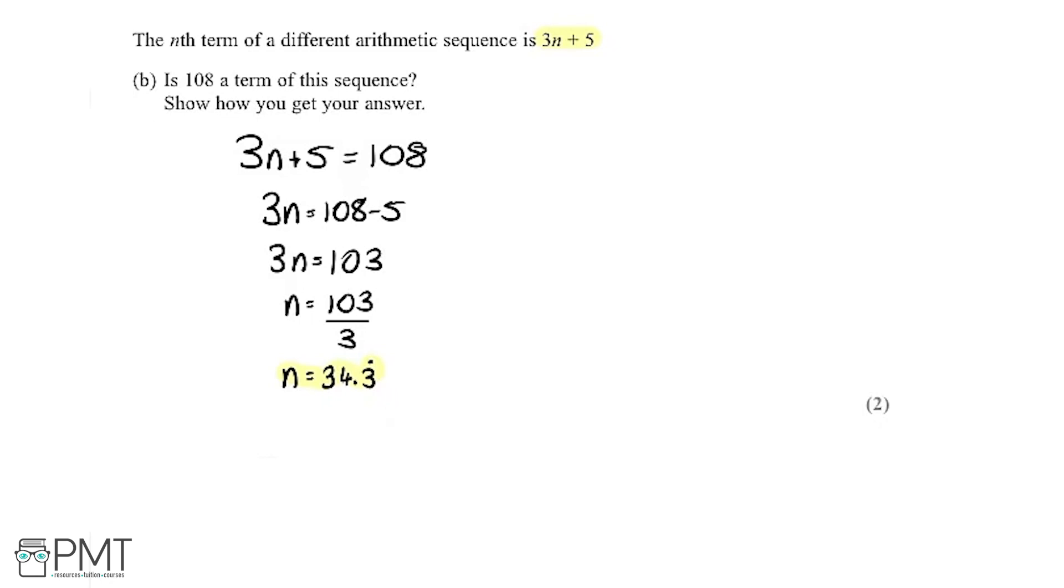You can't be in between two terms, they're discrete values. So we've got a term at n equals 1, a term at n equals 2, a term at n equals 3, and so on, but we don't have a term here. So no, it's important to put this bit in. No, because we're answering the question saying is it a term? We're saying no, because 34.3 recurring isn't an integer. It's not possible because we know n can only be values like 1, 2, 3, 4, it can only be integers.